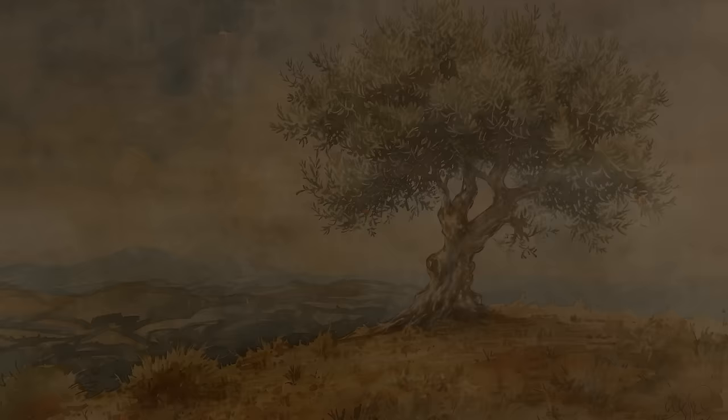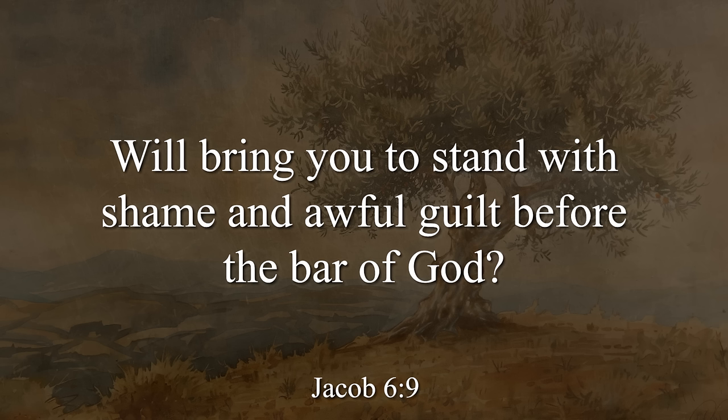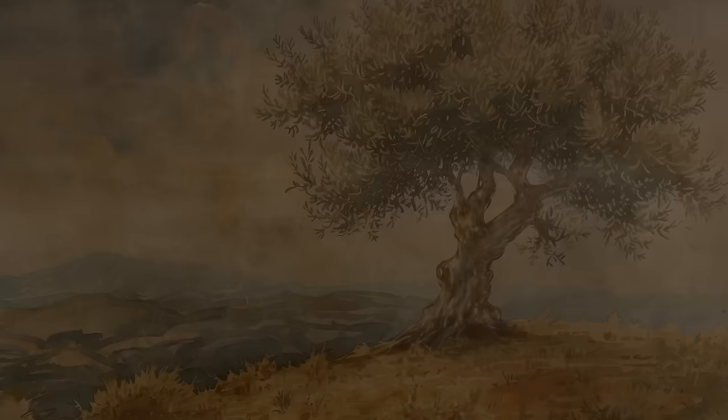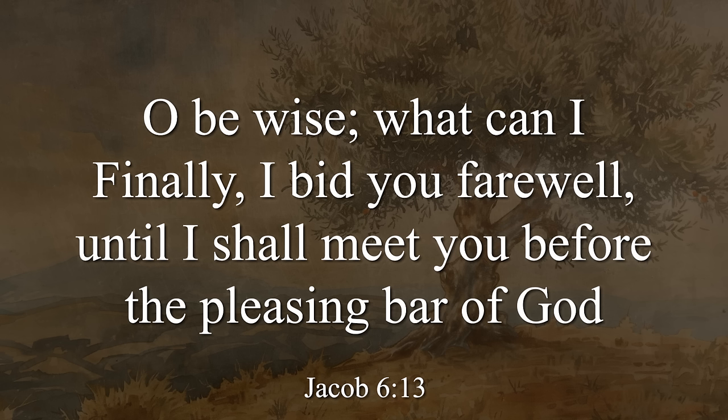Jacob's audience would have known that the olive tree takes a long, long time to grow — you are really planting and working for future generations. What did Jacob want more than anything in chapter 2? He wanted people to have families and build a strong, righteous, Zion society. He encourages them: don't reject this. In verse 9, he says, 'Know ye not that if ye will do these things, the power of the redemption and the resurrection which is in Christ will bring you to stand with shame and awful guilt before the bar of God?' In verse 11, he says repent. Then he ends: 'Oh, be wise. What more can I say? I bid you farewell until I meet you at the pleasing bar of God.'